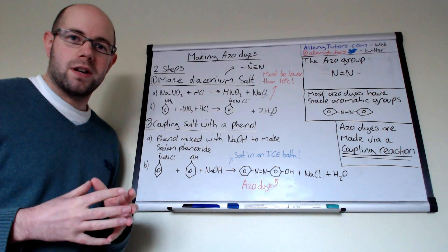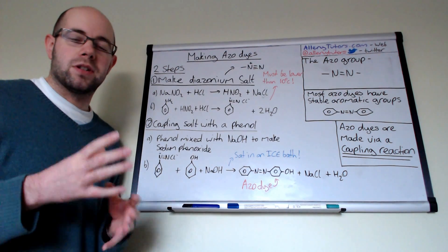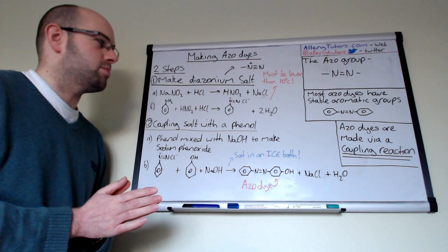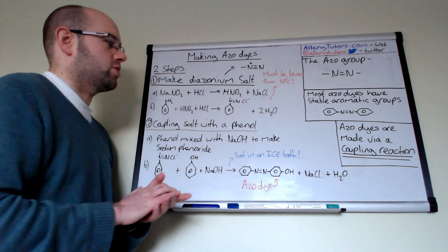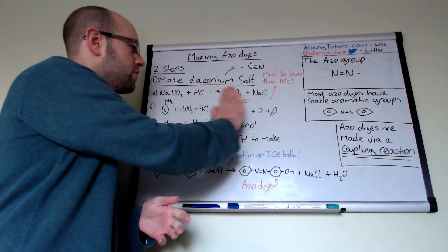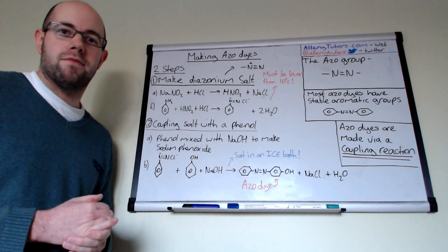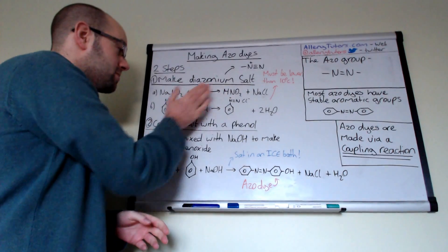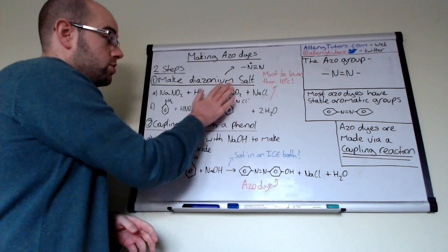The nitrous acid is really unstable, and so therefore this is the reason why we have to do it in an in situ process. We actually make sodium chloride as well. We'll have this in a reaction vessel, and then at the same time as soon as this is made, this can react with phenylamine.